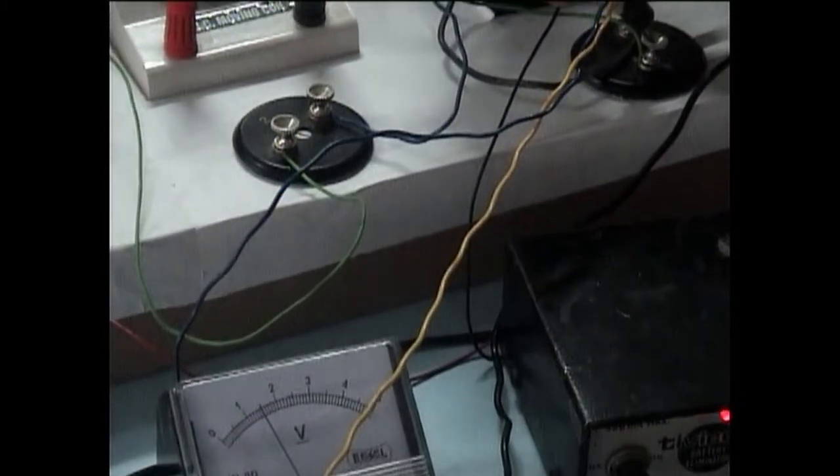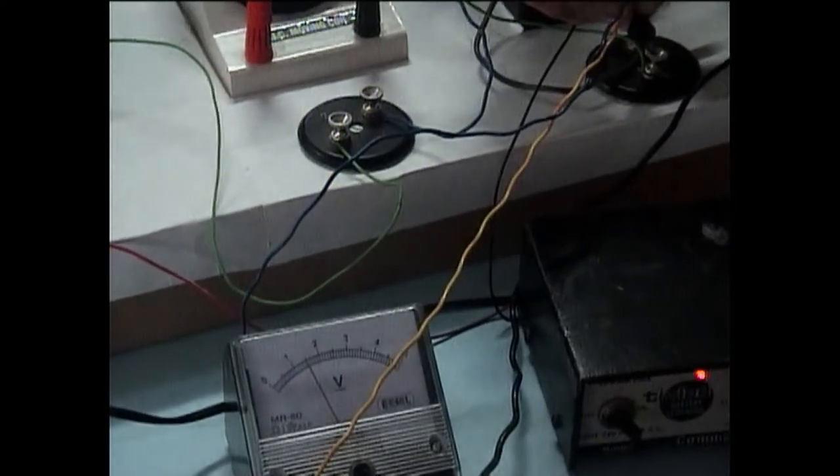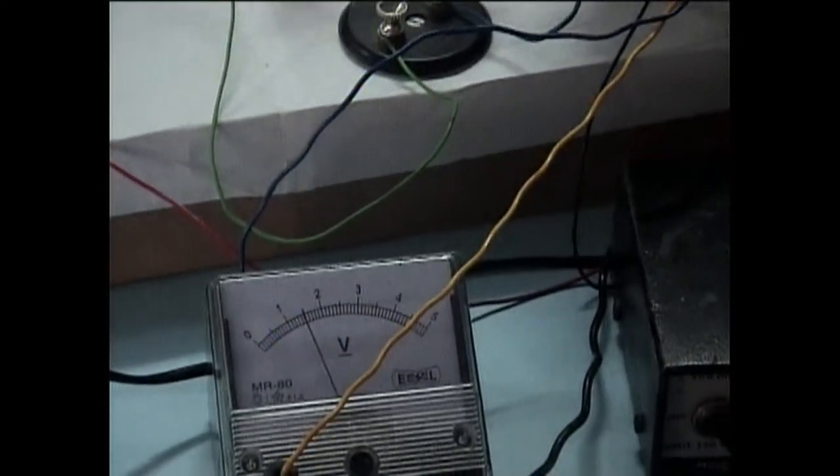As the first and third resistors are of 5 ohms each, the potential difference across the two resistors is also the same. That is 1.5 volts.